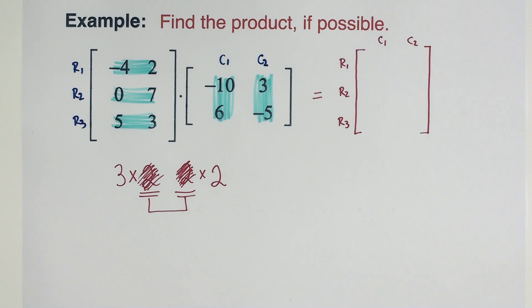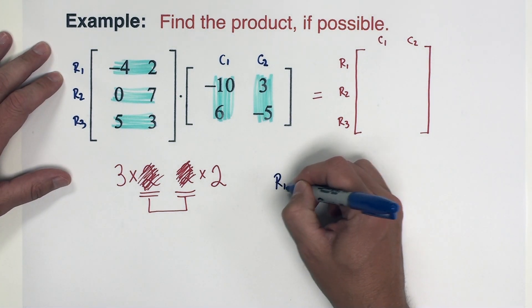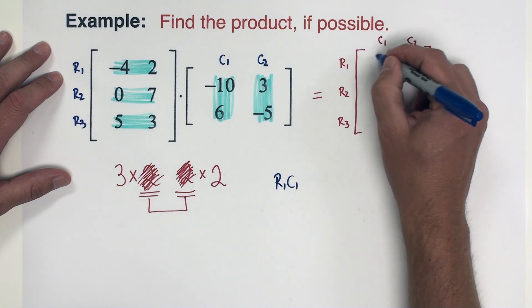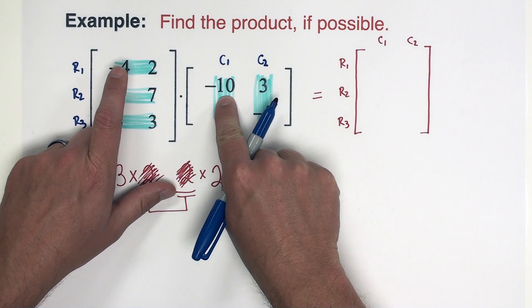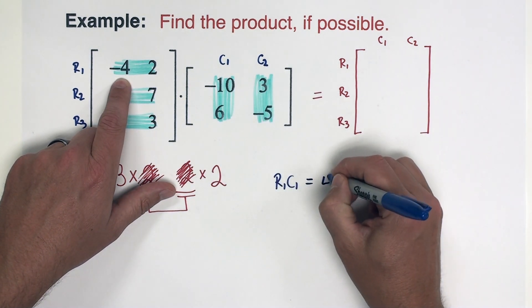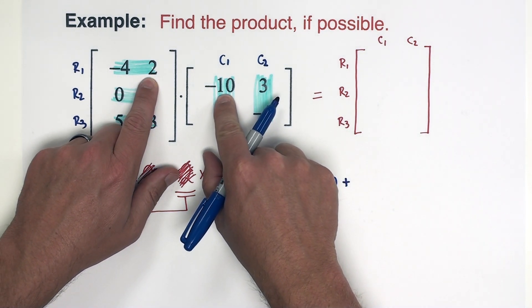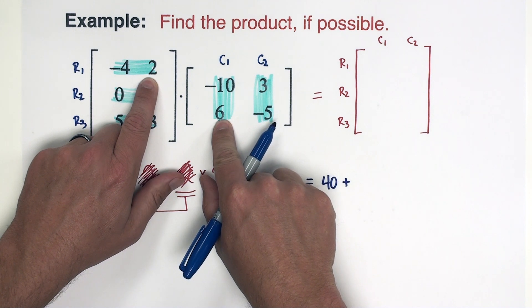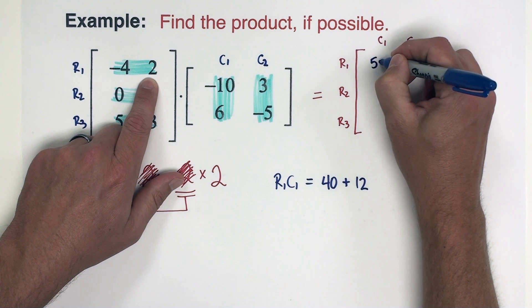I'm not going to show the work for every single number, but let's go ahead and show some of it since this is still kind of an instructive video. Let's do the first row and the first column, the number that's going to go right here. So I'm going to take the first number of each of these, so negative four and negative 10, which is going to be positive 40. Plus, I'm going to take the second number of the first row and the second number of the first column, multiply those and get 12. So this is going to be 52.